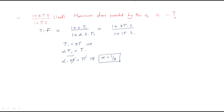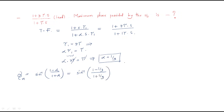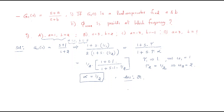With α = 1/3, substitute into the maximum phase formula: φmax = sin⁻¹((1−α)/(1+α)) = sin⁻¹((1−1/3)/(1+1/3)) = sin⁻¹((2/3)/(4/3)) = sin⁻¹(1/2) = 30°. The maximum phase provided by the system is 30 degrees. These are the important problems regarding compensators.